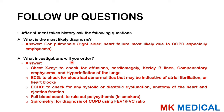Investigations to order: chest X-ray checking for effusions, cardiomegaly, Kerley B lines, compensatory emphysema, and hyperinflation. Always give a reason for each investigation. ECG to check for electrical abnormalities — atrial fibrillation or heart blocks. Echocardiogram to assess systolic or diastolic dysfunction, heart anatomy, and ejection fraction. Full blood count — smokers may have polycythemia, and to rule out anemia. Spirometry to diagnose COPD by calculating the FEV1/FVC ratio.